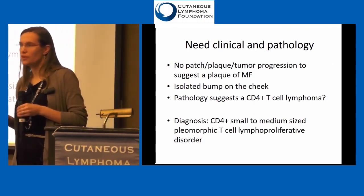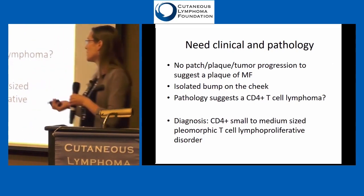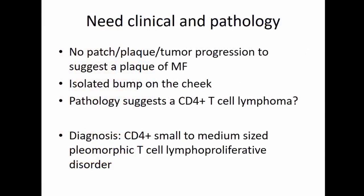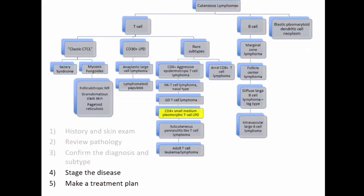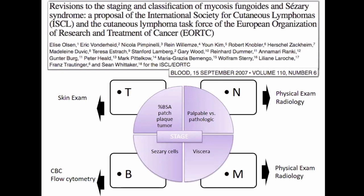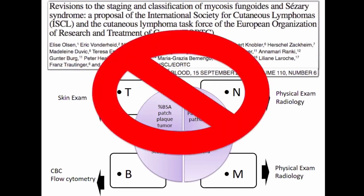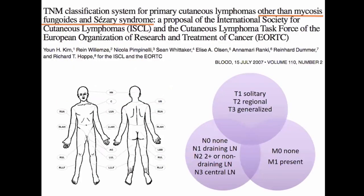Actually this fits better with a different type of T cell lymphoma — which got renamed to lymphoproliferative disorder three years ago because the prognosis was so good they said 'we really shouldn't be calling this lymphoma anymore.' This is CD4 positive, small to medium pleomorphic T cell lymphoproliferative disorder. It falls into the rare subtype category. There's a different classification scheme that's used — it's really better for clinical trials and doesn't have a lot of use in regular day-to-day clinic.